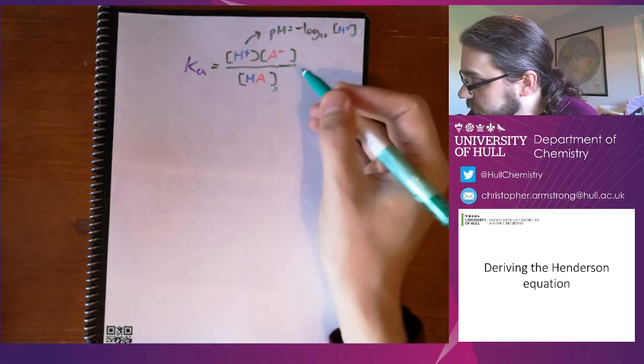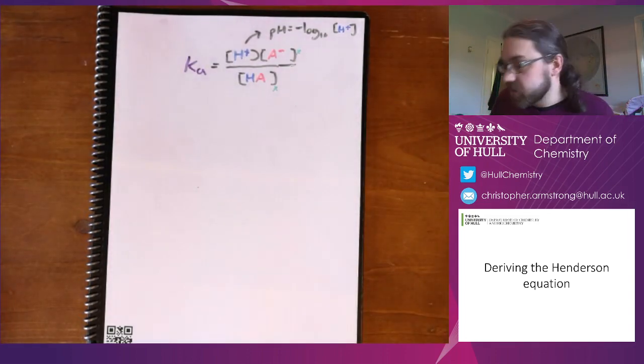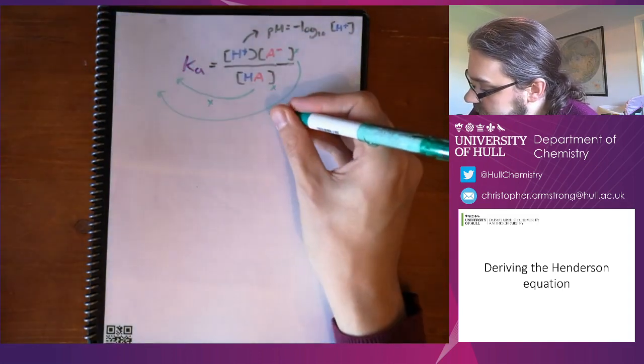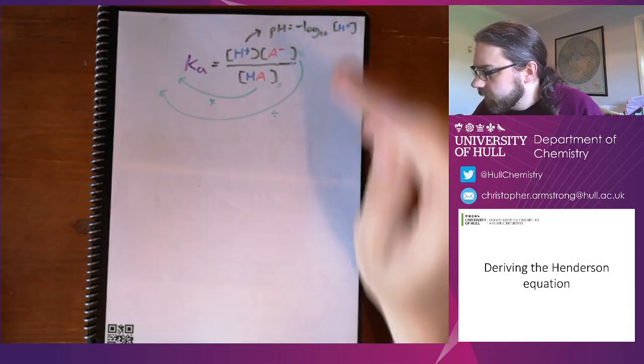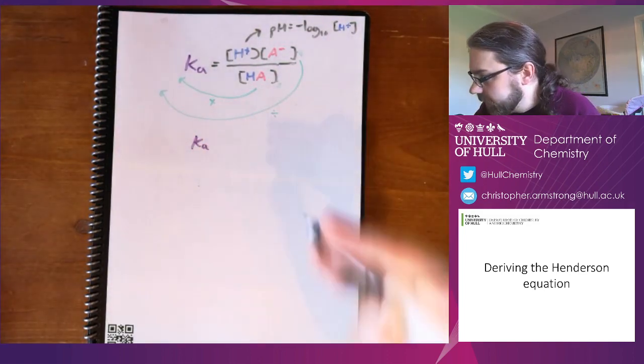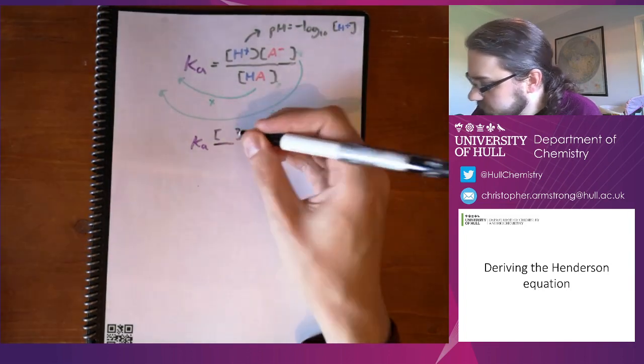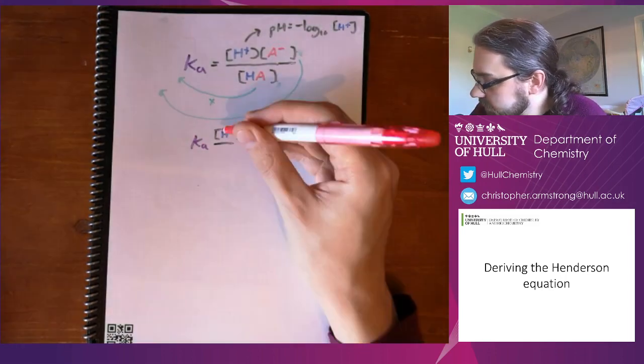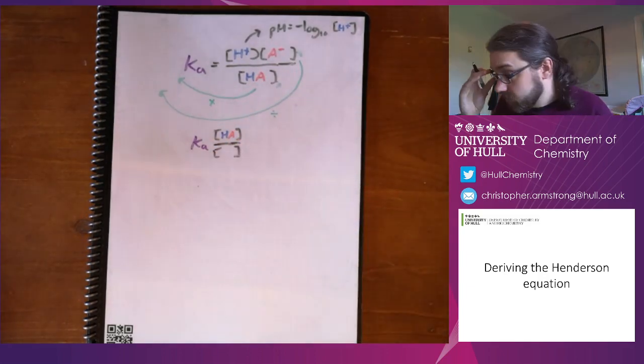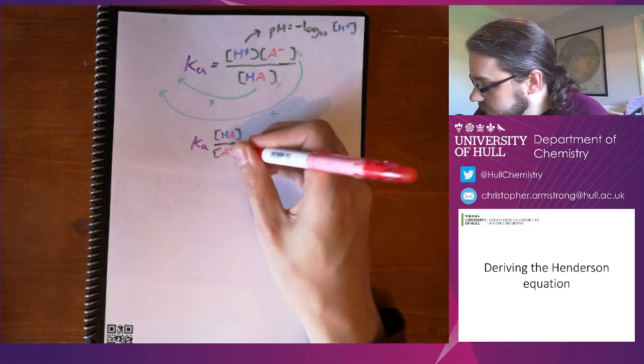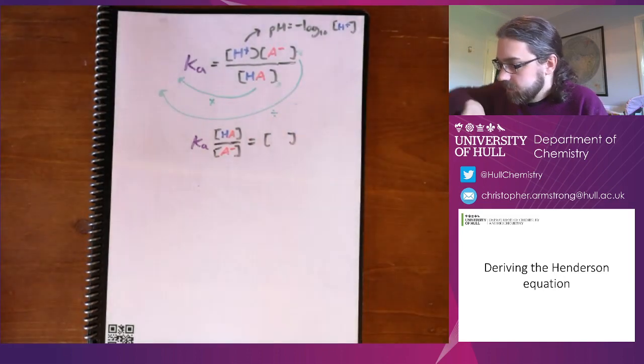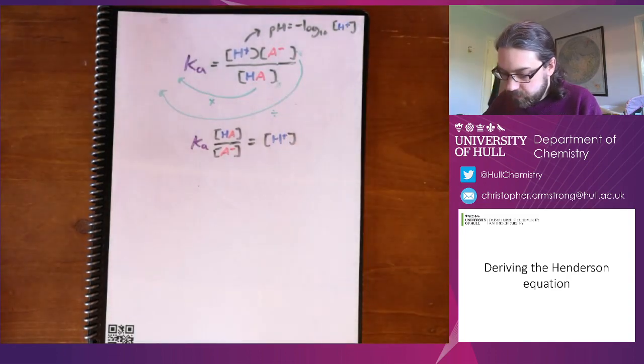So what do we do to rearrange this? First things first, we've got to bring these parts that don't have anything to do with pH to the other side of the equation. So we're going to multiply by that and divide by that. Now we can pull those off to the other side. We've got Ka, and then we've multiplied by the concentration of the undissociated acid, underneath we've got A minus the conjugate base. And what we're left with on the other side is H+, the concentration of those hydrogen ions that contribute to pH.